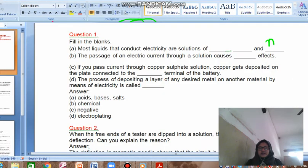Your first question is fill in the blanks. Most liquids that conduct electricity are generally solutions of acids, bases and salts, as I have told you in the chapter also. Second is passage of an electric current through a solution causes chemical effects, which we have learned about - electrolysis and electroplating, both are chemical effects. If you pass current through a copper sulphate solution, copper gets deposited on the plate connected to the negative side. Always remember that, copper positive ions. The process of depositing a layer of any desired metal is known as electroplating.